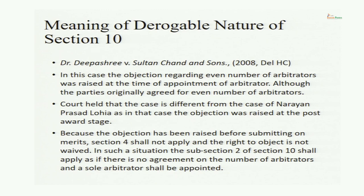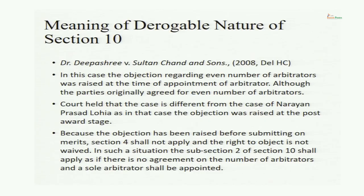The question was: can the publisher rely on an agreement providing for an even number of arbitrators, keeping in view the nature of Section 10? The key difference from Narayan Prashad Lohiya is that in that case the objection regarding faulty composition was raised at a post-award stage under Section 34, whereas here in Dr. Deepashree versus Sultan Chandan Sons, the objection regarding breach of Section 10 was raised at the preliminary stage of appointment of arbitrators — even before the tribunal was established. This is well within time, because Section 16 requires composition questions to be raised before submitting on merit.